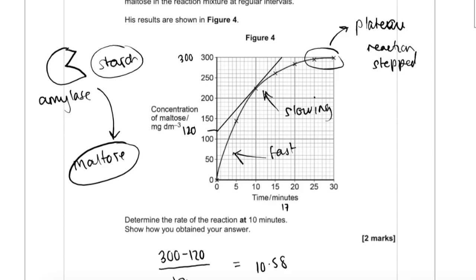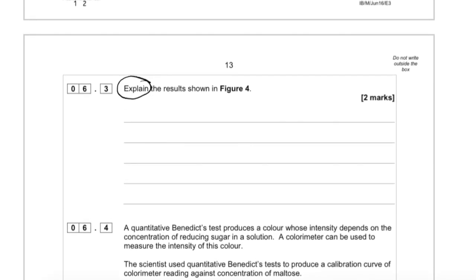And then I would say, in the next bullet point, that over time the rate of reaction is slowing because we've got a finite amount of starch, so actually the substrate is being used up. And then, after about 25 minutes, the graph is plateauing - the concentration of maltose stops increasing, and that's because all the substrate has been used up. I would bullet point that there as three points.